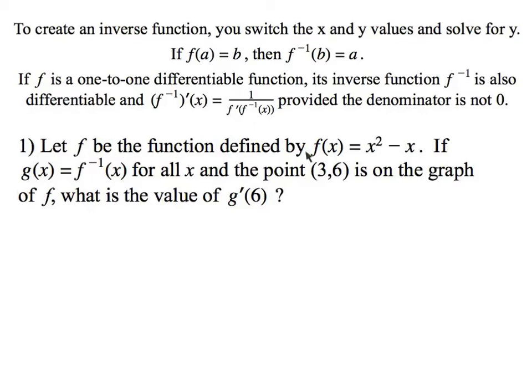Let f be a function defined by f(x) = x² - x. If g is equal to the inverse, so they're just saying g is the inverse of f for all values x, then the point (3,6) is on the graph of f. If you plug in 3, do you get 6 out? They gave us a coordinate. They could have said figure that out yourself, but they actually gave it to us.